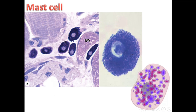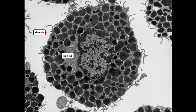When stained with H&E, mast cells appear basophilic, stained by hematoxylin, and the high amount of granules obscures the nucleus so we cannot recognize it clearly. By electron microscope you can see a large number of granules inside the cell with a central nucleus.